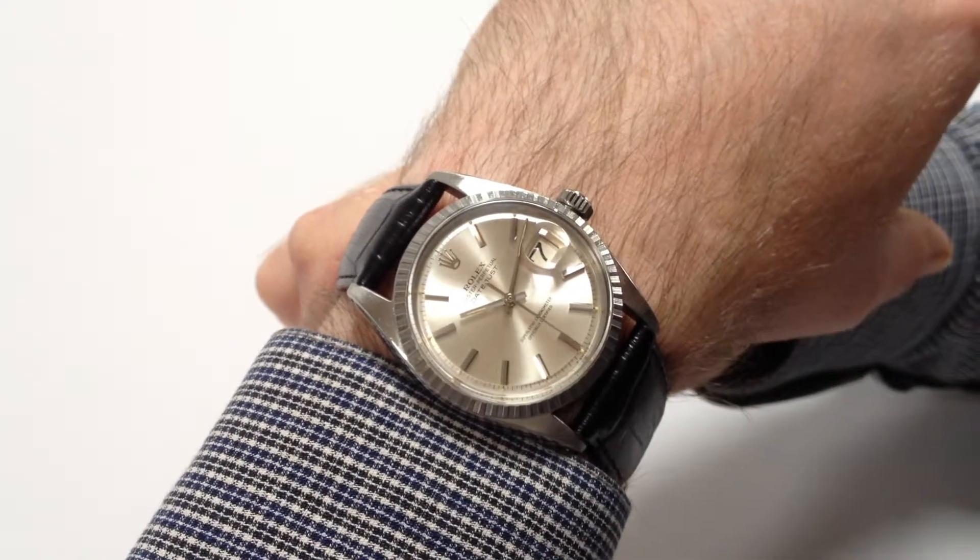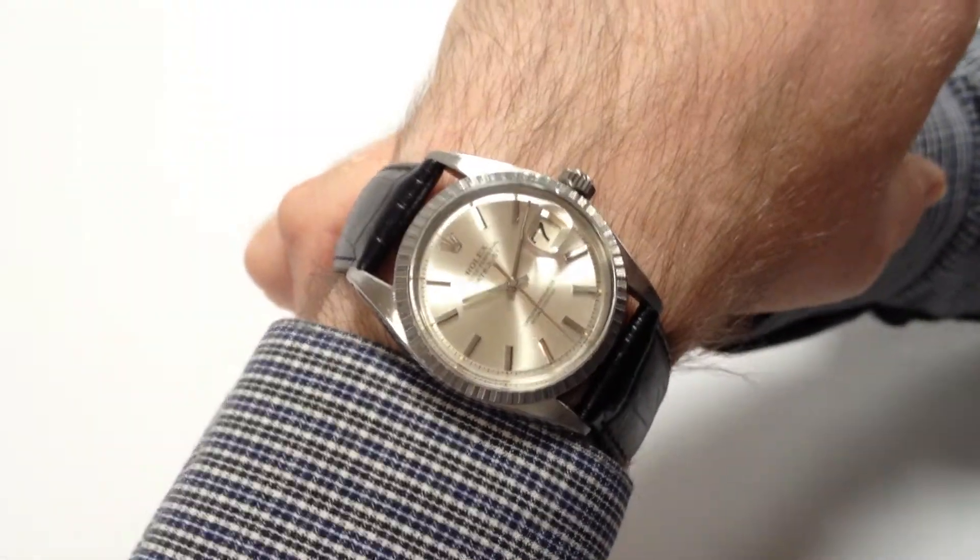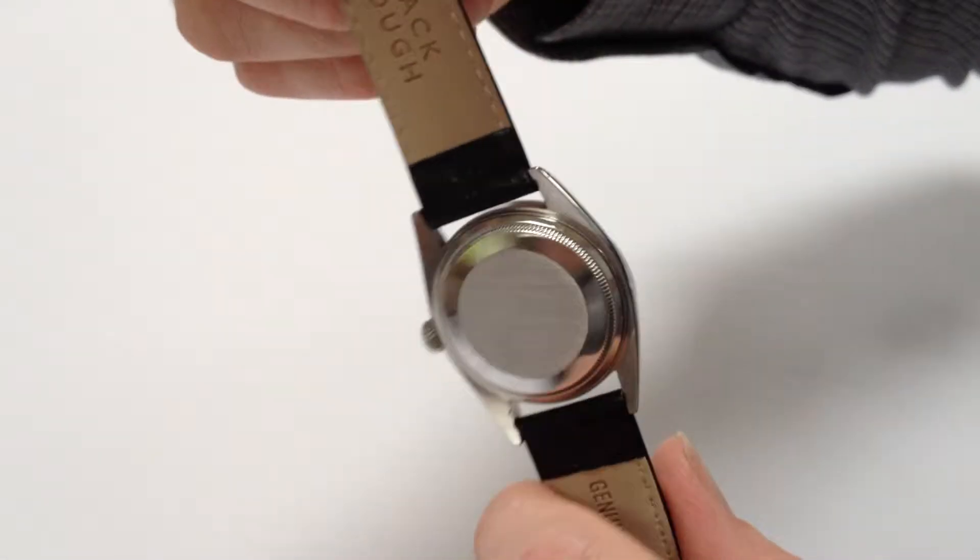This Rolex Oyster Perpetual Datejust is date stamped from 1966. It's a steel watch and automatic.